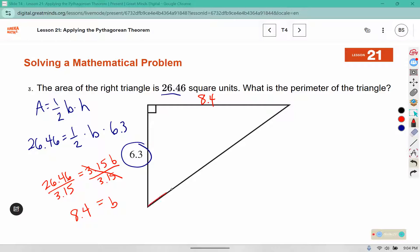To find the perimeter I need this side length as well. So I have 6.3 squared plus 8.4 squared equals C squared. So 6.3 squared is 39.69. 8.4 squared is 70.56. Add those together. There's 110.25. Then take the square root of both sides.